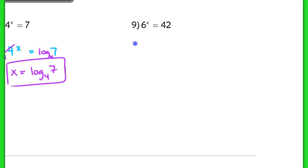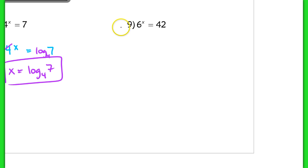In number 9, one more time, we're going to take log base 6 on both sides. We're taking the log of 6 on both sides. We end up with x equaling log base 6 of 42.